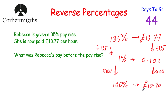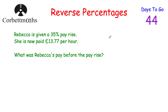So Rebecca was paid £10.20 before the pay rise. To summarise: she was given a 35% pay rise, so that's 135% equal to £13.77. We divide both by 135 to find 1% is £0.102. Then multiply by 100 to find 100%, which is £10.20 — that's how much Rebecca was paid before her pay rise.